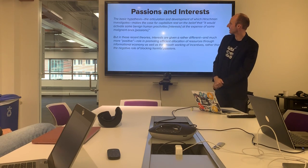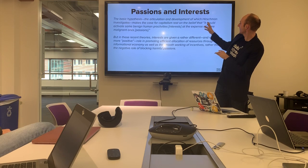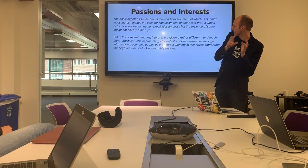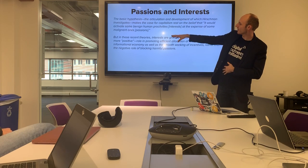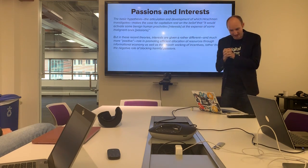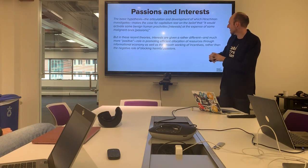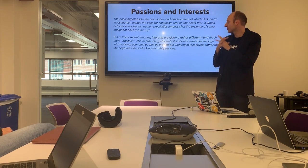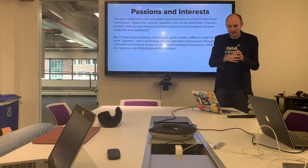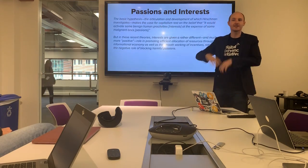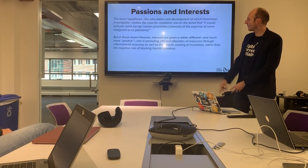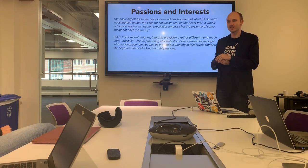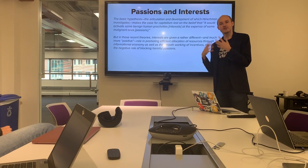This book is about the history of the 1600s, 1700s, 1800s — the political philosophers essentially arguing for something like capitalism before it became the dominant mode of societal organization. His basic hypothesis is that the case for capitalism rests on the belief that it would activate some benign human proclivities — these 'interests' — at the expense of some malignant ones — the 'passions.' The idea is that people were arguing: we have these passions like greed, and we can actually leverage them for good, for the betterment of society.